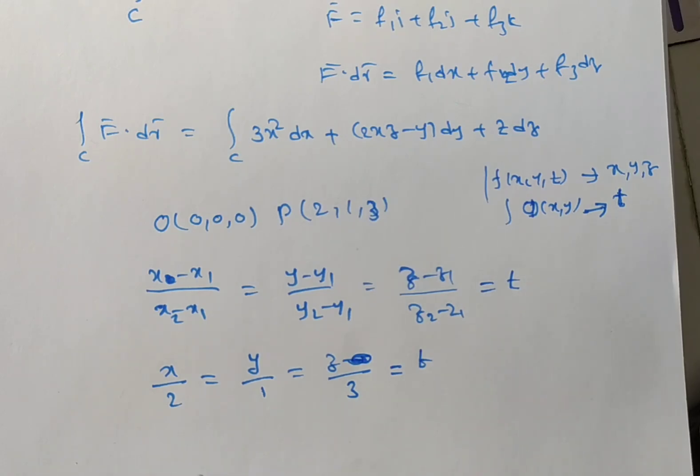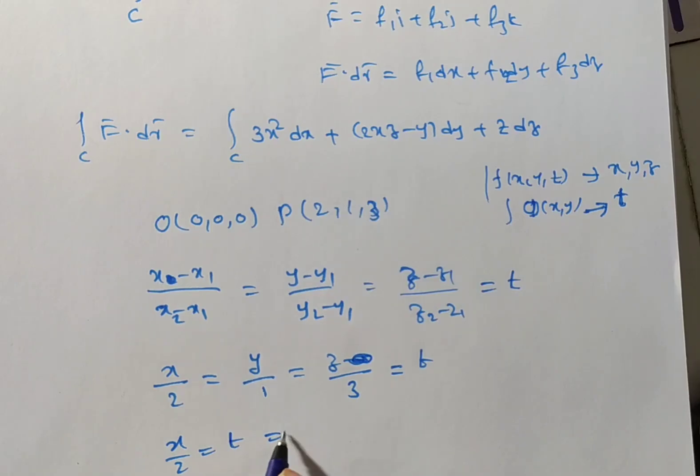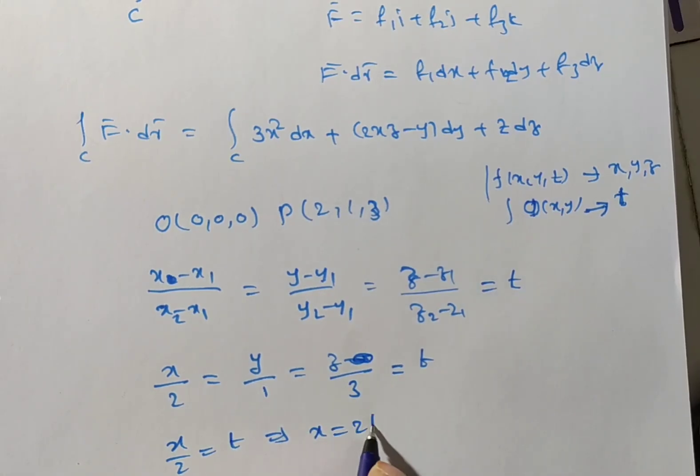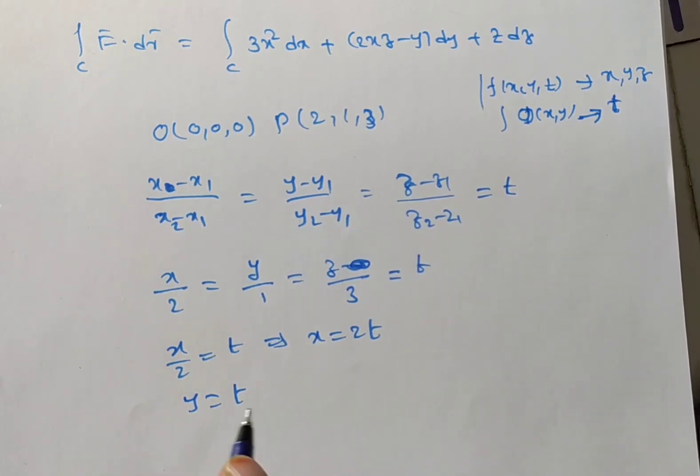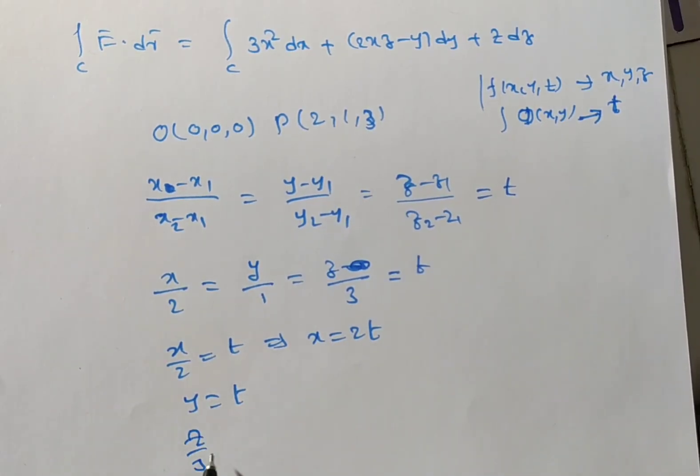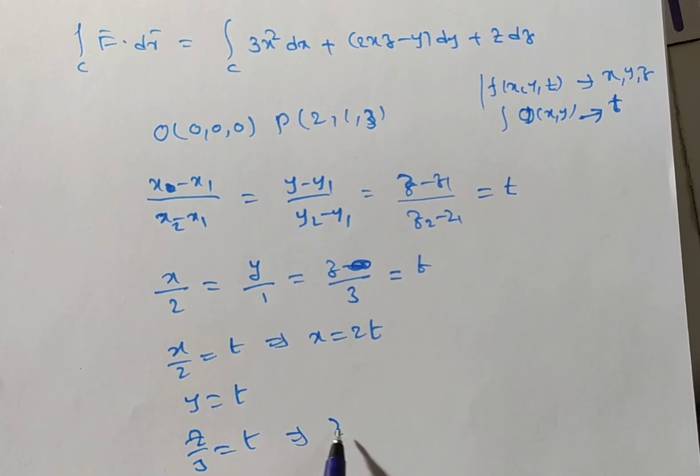Now, you see here x by 2 equals t. Can I write it? x by 2 equals t implies what you can say? x equals 2t. Next, y by 1 is nothing but y, y equals t. Next, z by 3 equals t. So, what you can write from this? z equals 3t. Now, you change x, y, z values in terms of t.